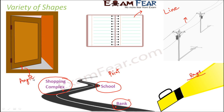Now, what are all these lines, points, rays, and angles? These small things form the basis of geometry. All of these things help us to form a variety of shapes that we see around us.